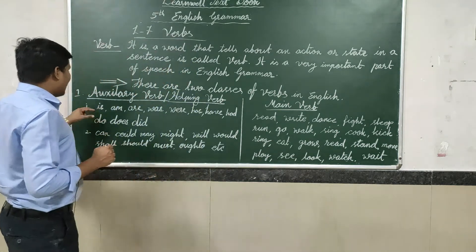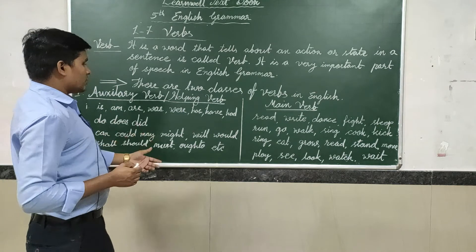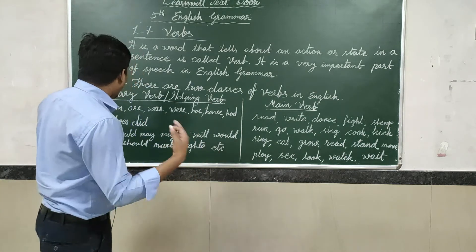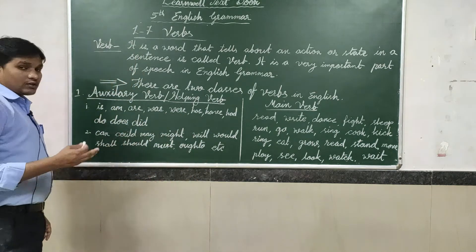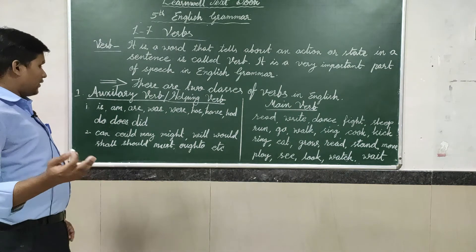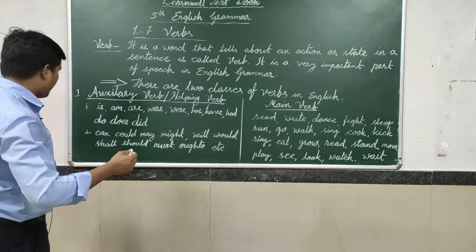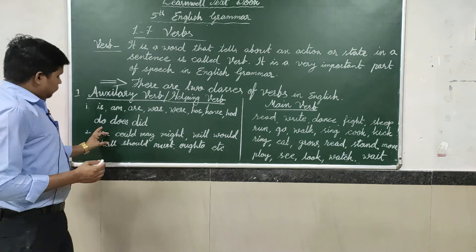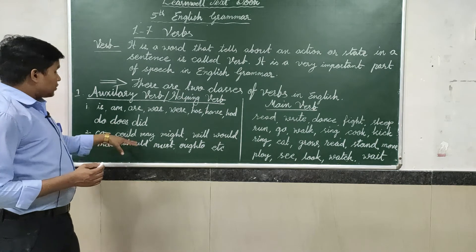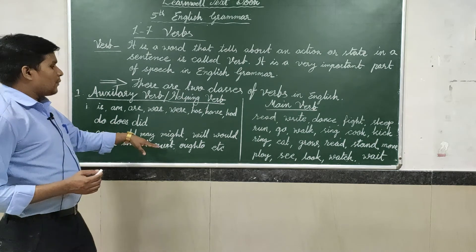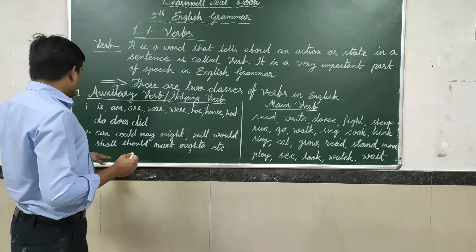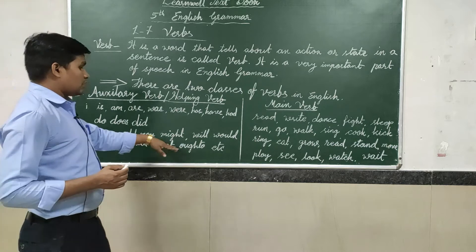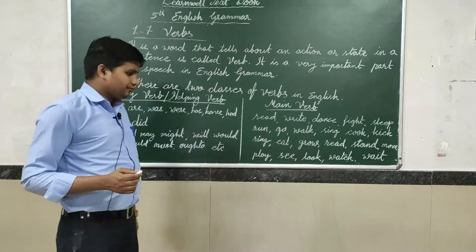So students, first we are going to discuss what type of words come under the auxiliary verb. Those are: is, am, are, was, were, has, have, had, do, does, did, etc. Next: can, could, may, might, will, would, shall, should, must, ought, etc.